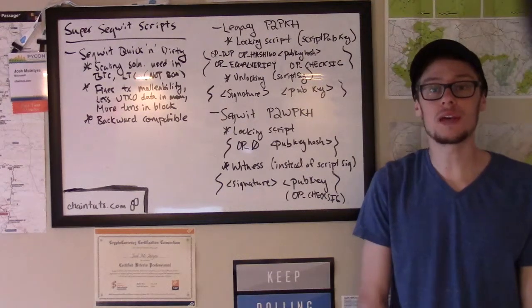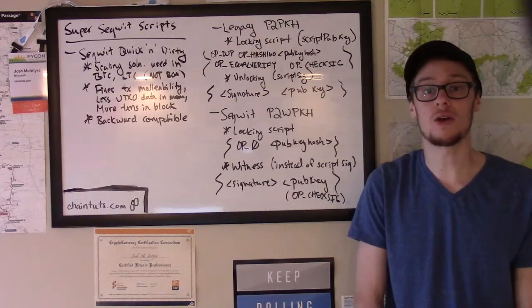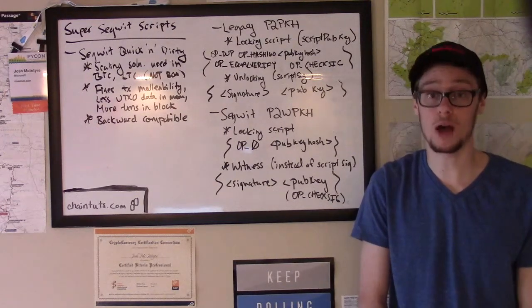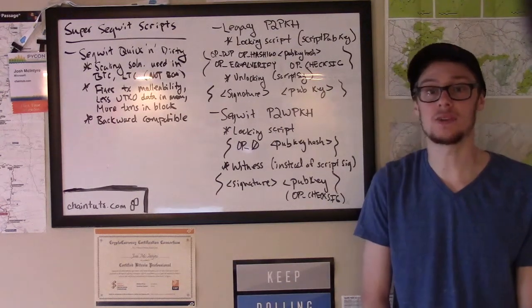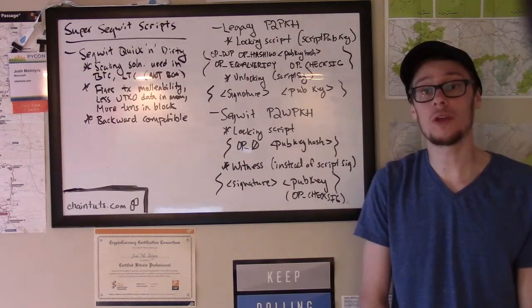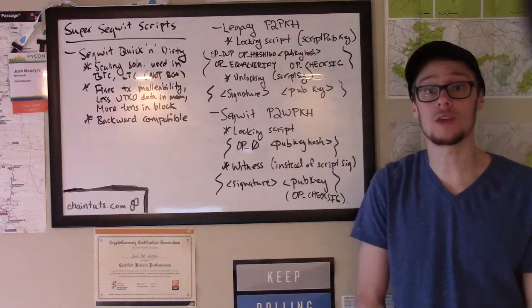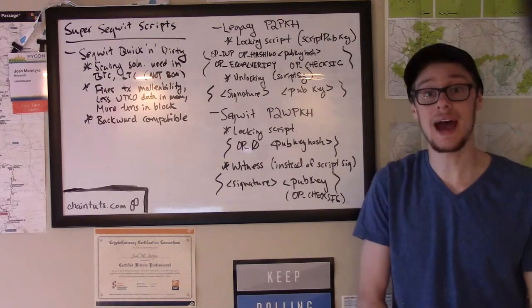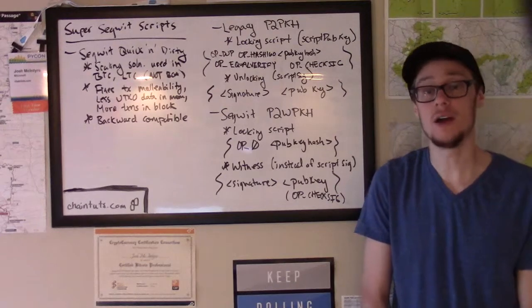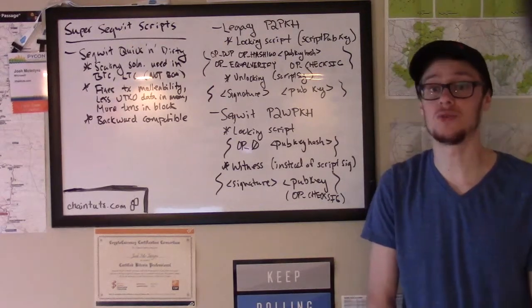This is a really interesting scaling solution that also fixes a couple of other problems that have been historical on the Bitcoin blockchain, and Litecoin has adopted SegWit technology as well. It's important to note that another very popular currency I talk about a lot, Bitcoin Cash, has opted not to implement SegWit on their blockchain. So none of this applies to BCH.